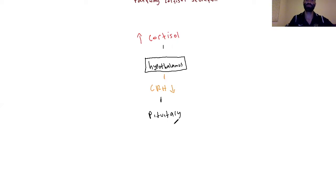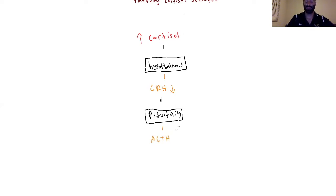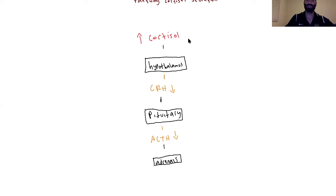The pituitary kind of views the hypothalamus as its big brother — whatever the hypothalamus does, the pituitary does in kind. So the hypothalamus detects that cortisol is too high and reduces the amount of corticotropin-releasing hormone, or CRH, secreted. CRH is received by the pituitary, which in turn secretes lower levels of the tropic hormone adrenocorticotropin hormone, or ACTH. ACTH is received by the third integrating center — the adrenals — which are the last step in the pathway because they secrete the active hormone cortisol. Since the adrenals are receiving a lower signal of ACTH, this results in reduced cortisol secretion, returning the pathway to homeostasis.